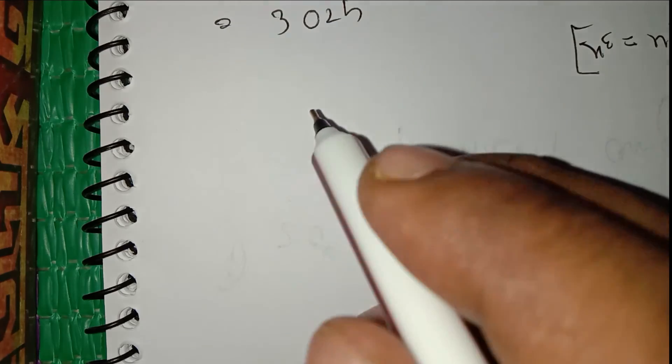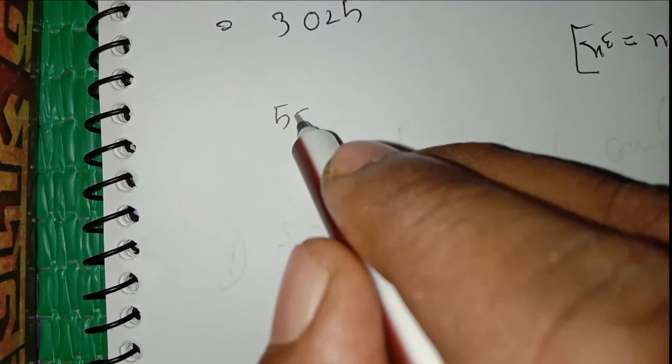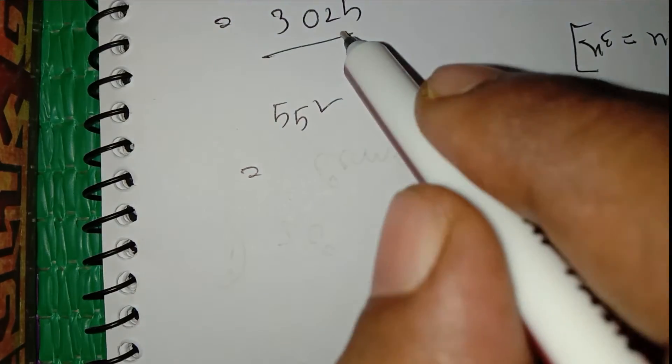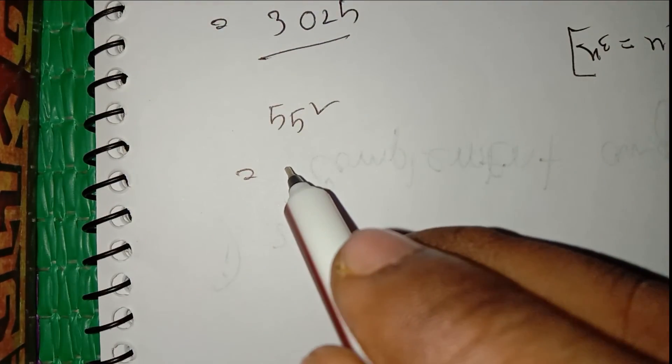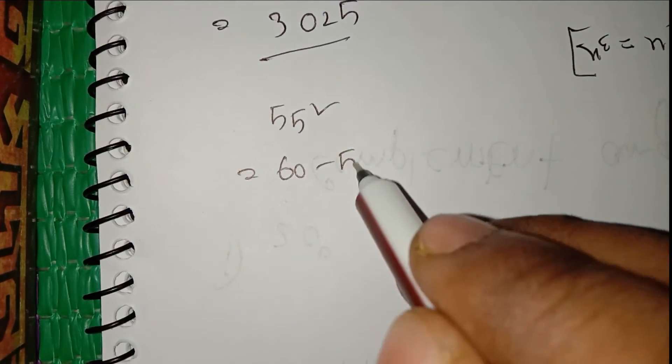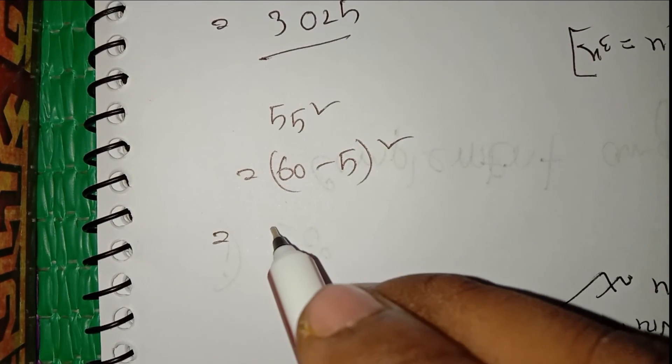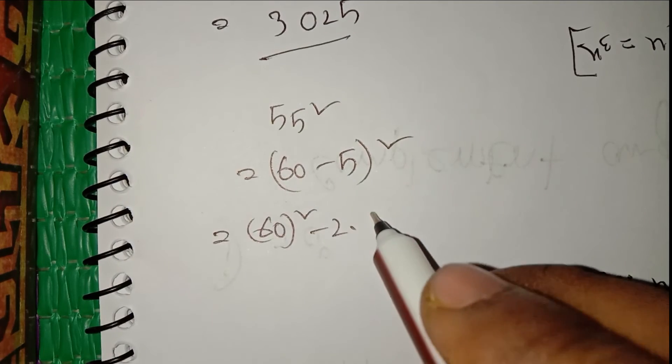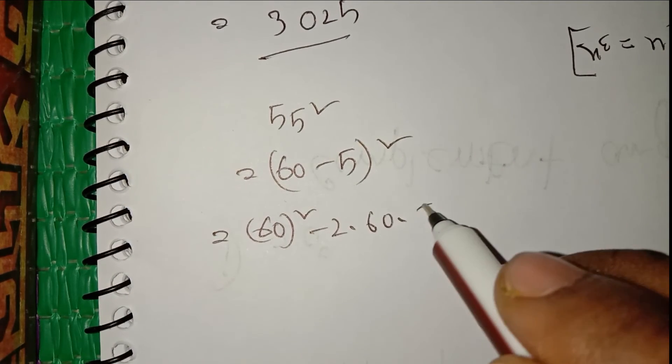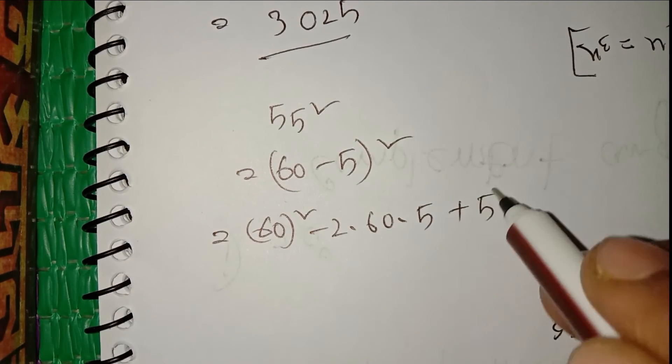Now look, if we do another, this is the 55 square which will be 3,025. Now 60 minus 5 whole square will give the same answer: 60 square minus 2 into 60 into 5 plus 5 square.